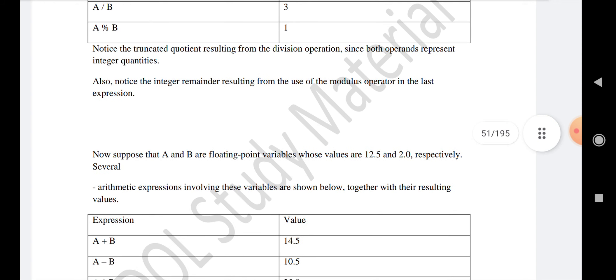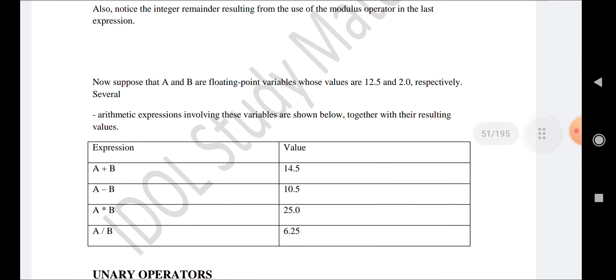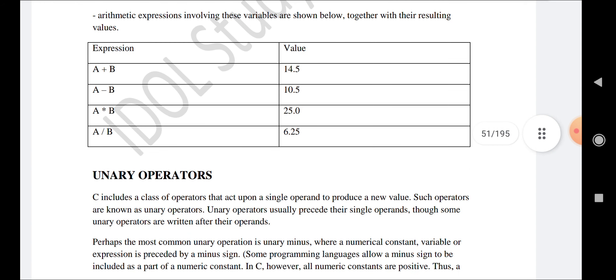Now suppose a equals 12.5 and b equals 2.0 respectively, where we're working with floating-point values. Some arithmetic problems are experienced again with these values.